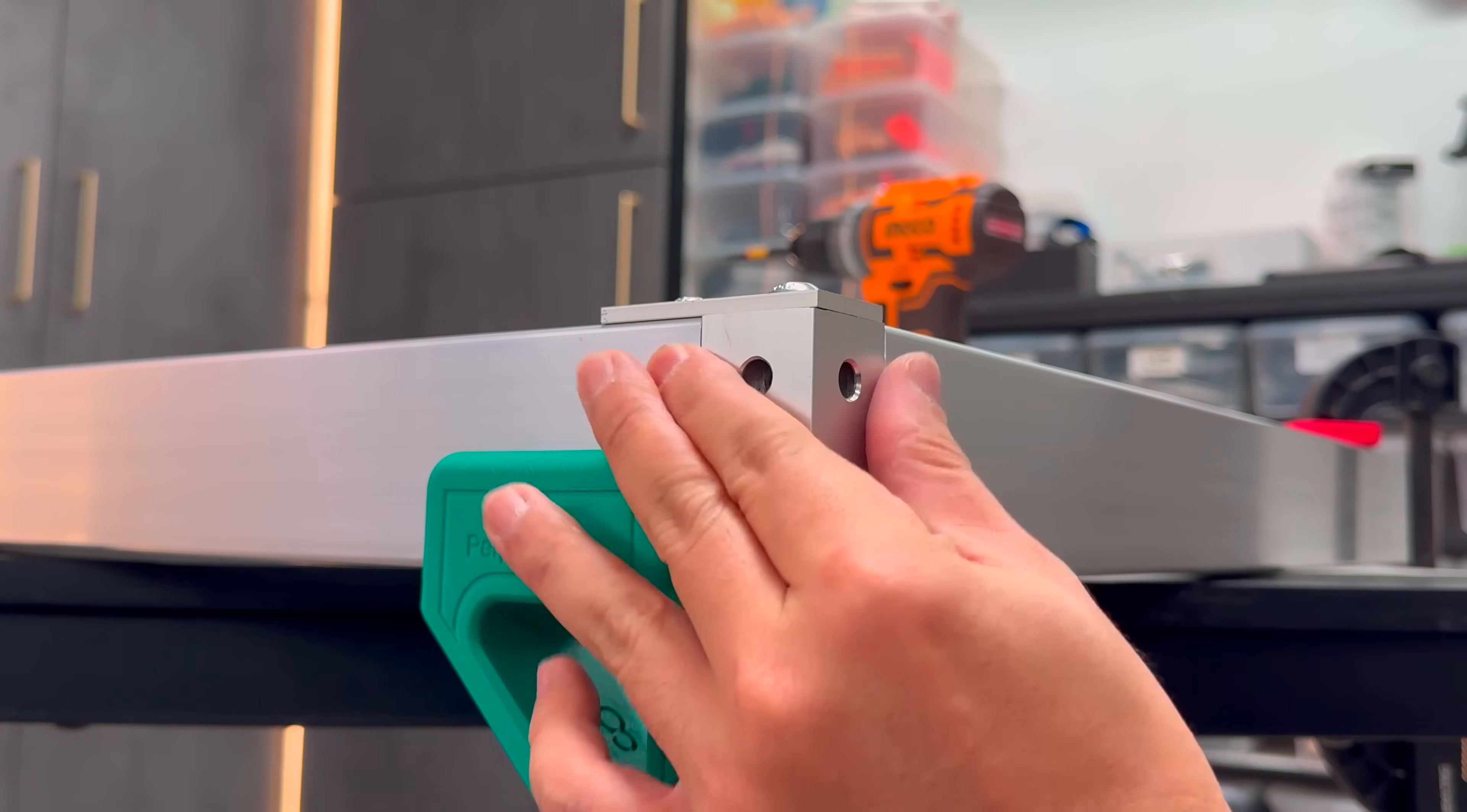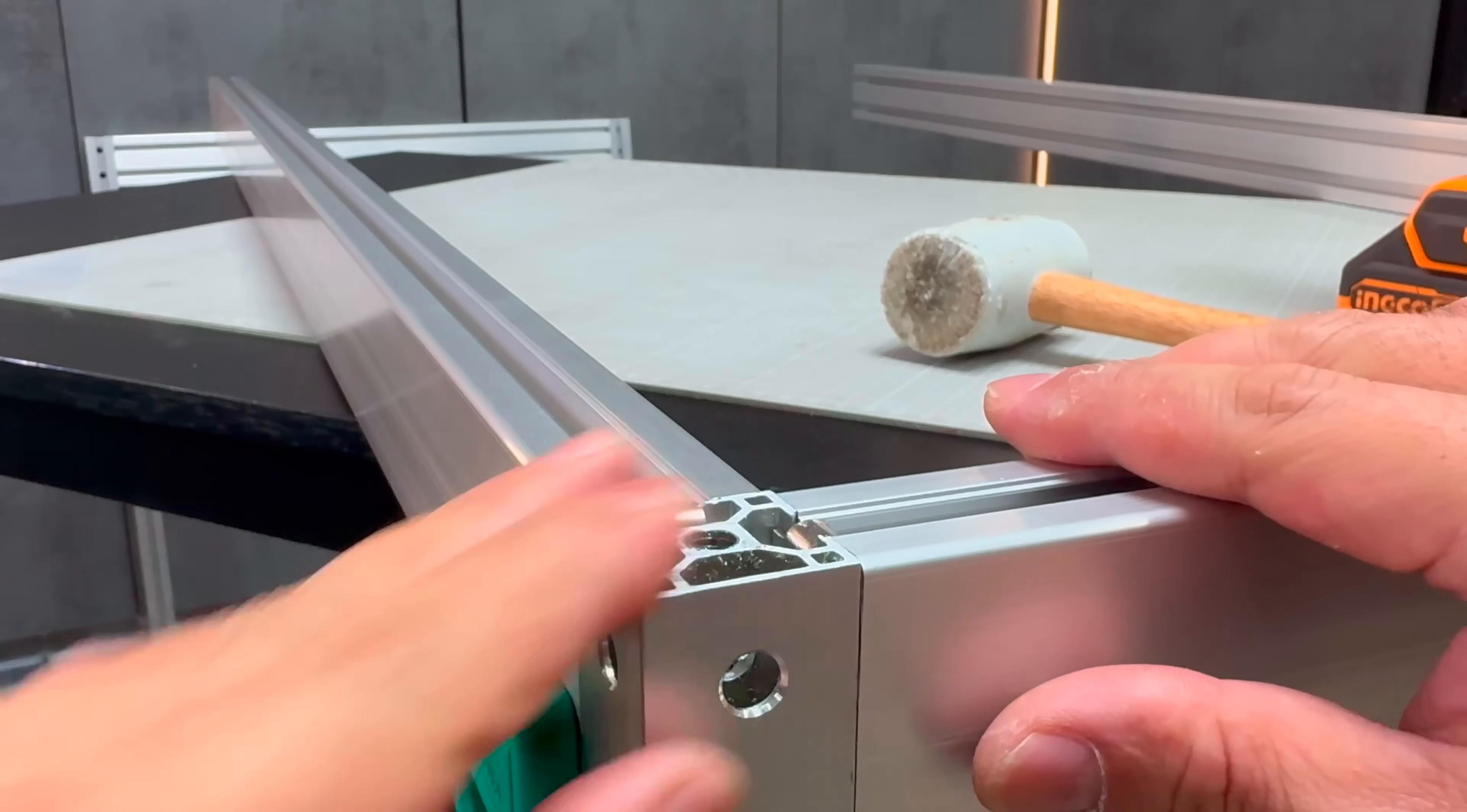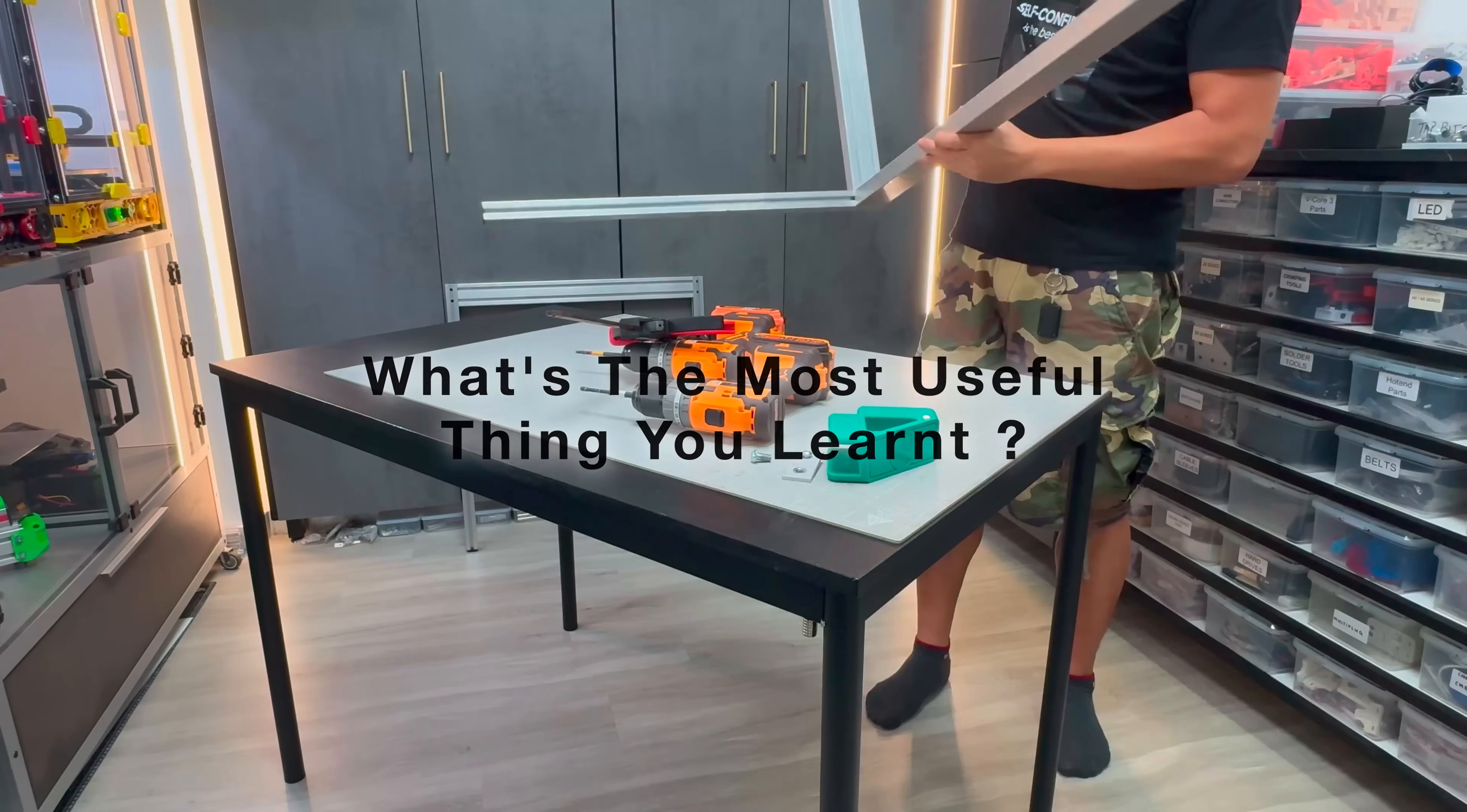Before removing the alignment jig, I always run my fingers across to inspect the result. Every single time, it's impressive. Now that you've seen half of my demonstration, what's the most useful thing you learned? Let me know in the comments.